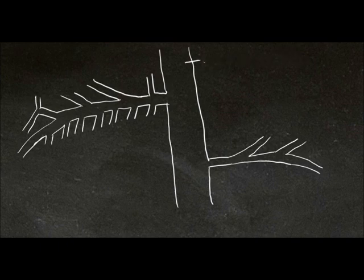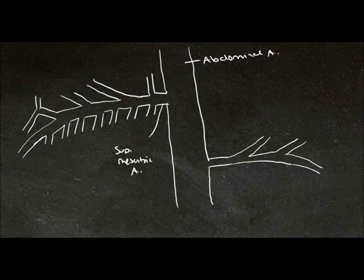Here we have our abdominal aorta, our superior mesenteric artery, and our inferior mesenteric artery.